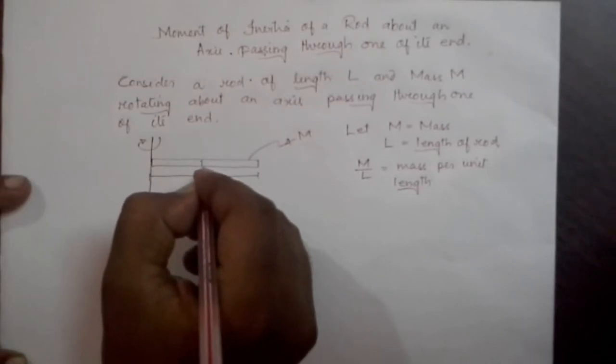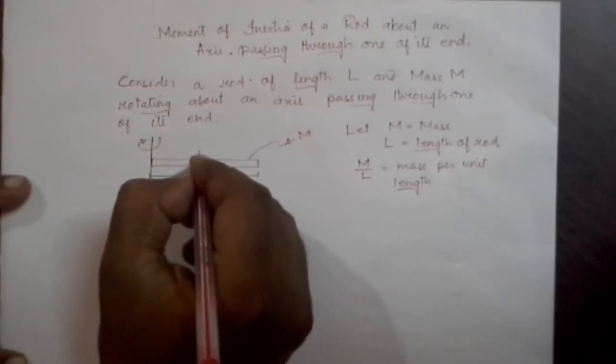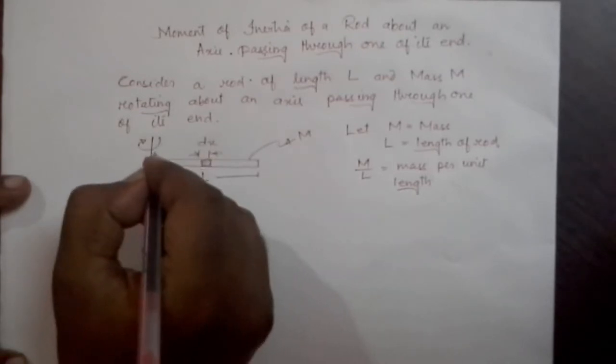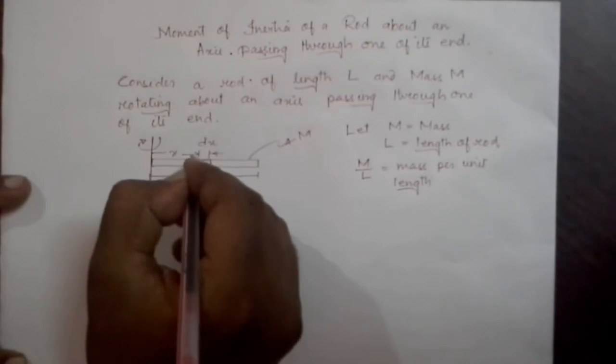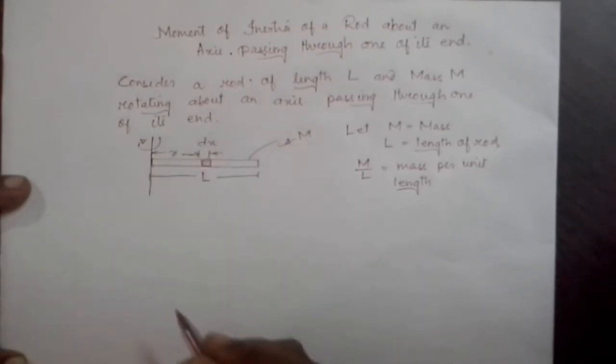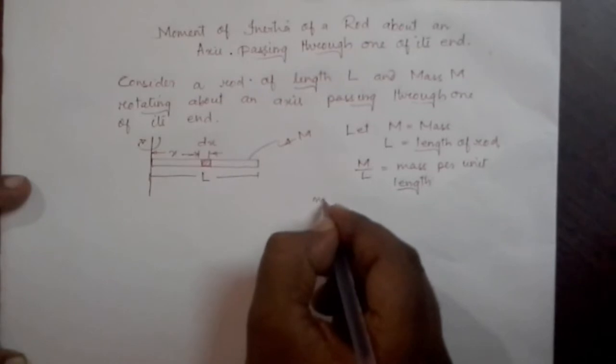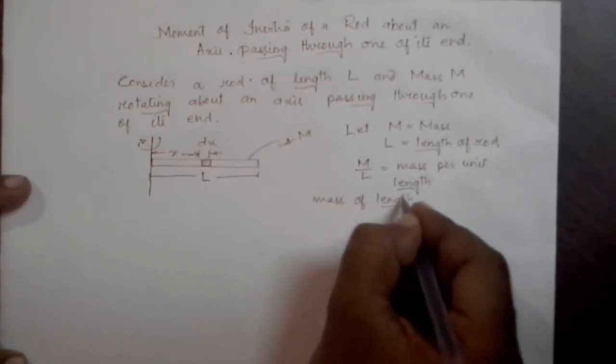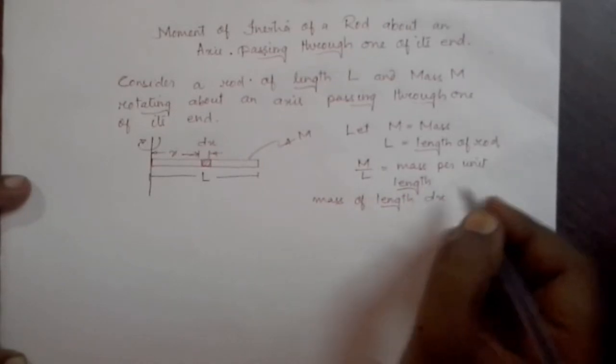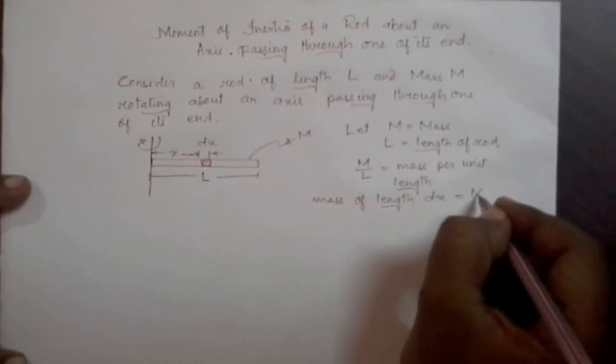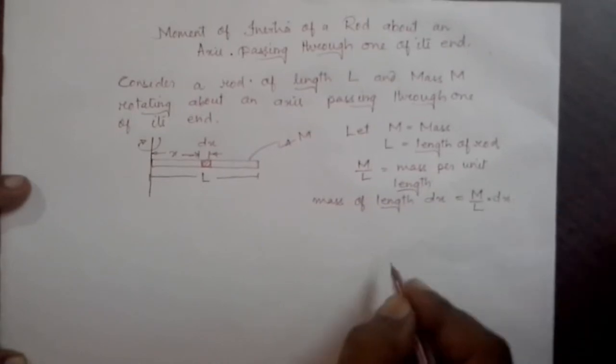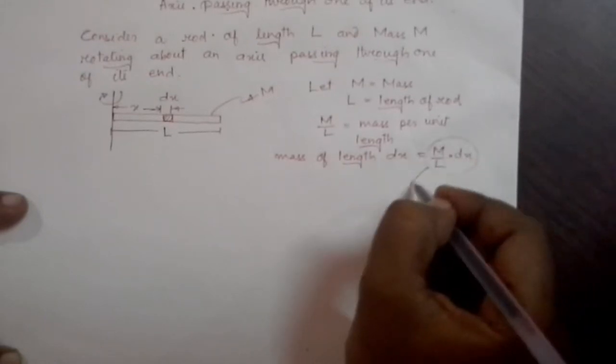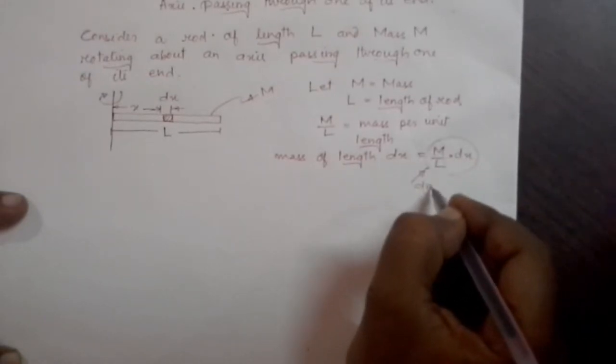Consider a small elemental section of length dx at a distance of x from the axis of rotation. So mass of length dx will be equal to M by L into dx. Let us call this entire term to be dm.